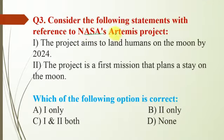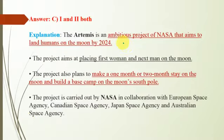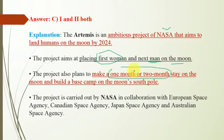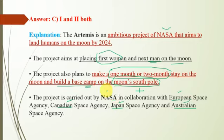Question number 3 is with reference to NASA's Artemis project. Statement 1: The project aims to land humans on the moon by 2024. Statement 2: The project aims to place the first woman and next man on the moon. The project has also planned to build a base camp on the moon's south pole with a one to two month stay. Other space agencies collaborating with NASA include the European Space Agency, Canadian Space Agency, Japan Space Agency, and Australian Space Agency.